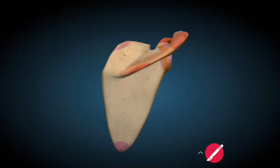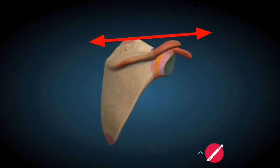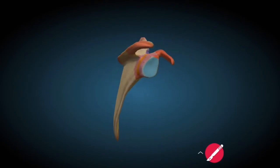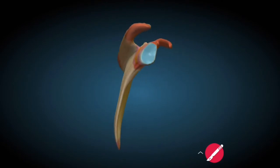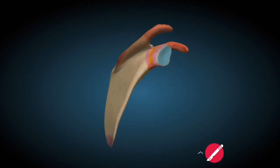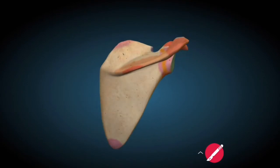There are three borders of the Scapula Bone: the medial border, the lateral border, and the superior border. The lateral border of the Scapula Bone is a thick border with many complex structures; therefore, it is called the complex border of the Scapula Bone.